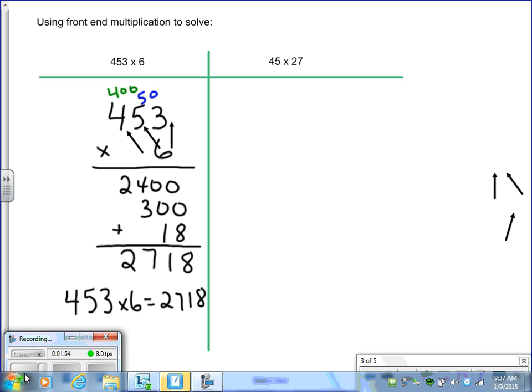With front-end multiplication, we add an extra step when we do two-digit times two-digit. We take our numbers and we line them up vertically. We'd have 45 times 27. And it looks the exact same way. We start from the front.